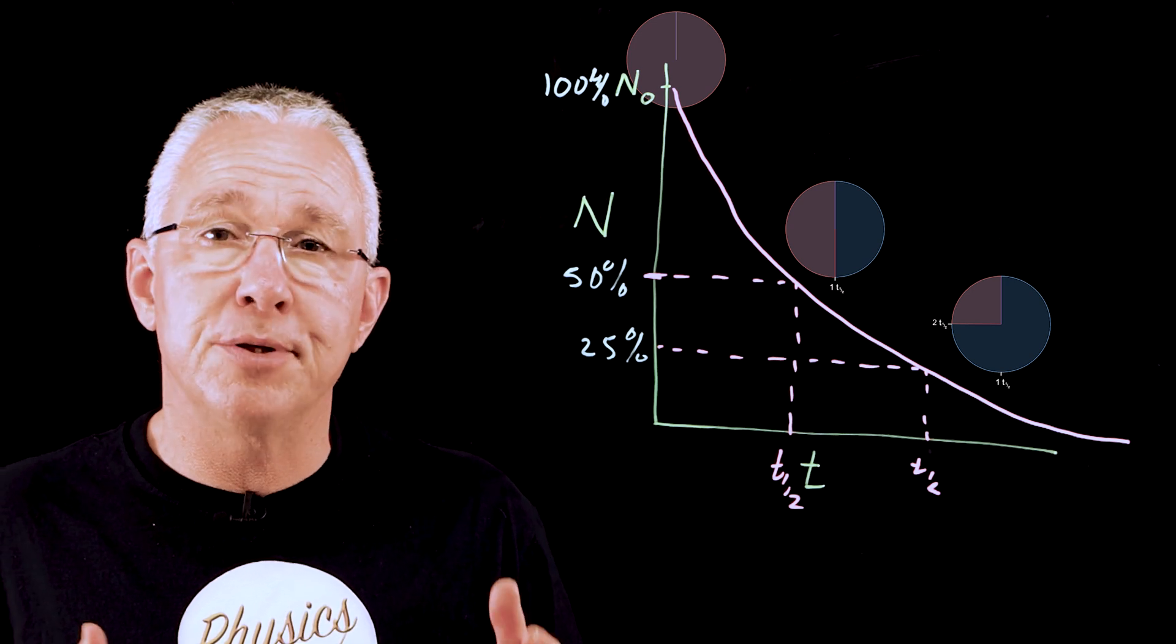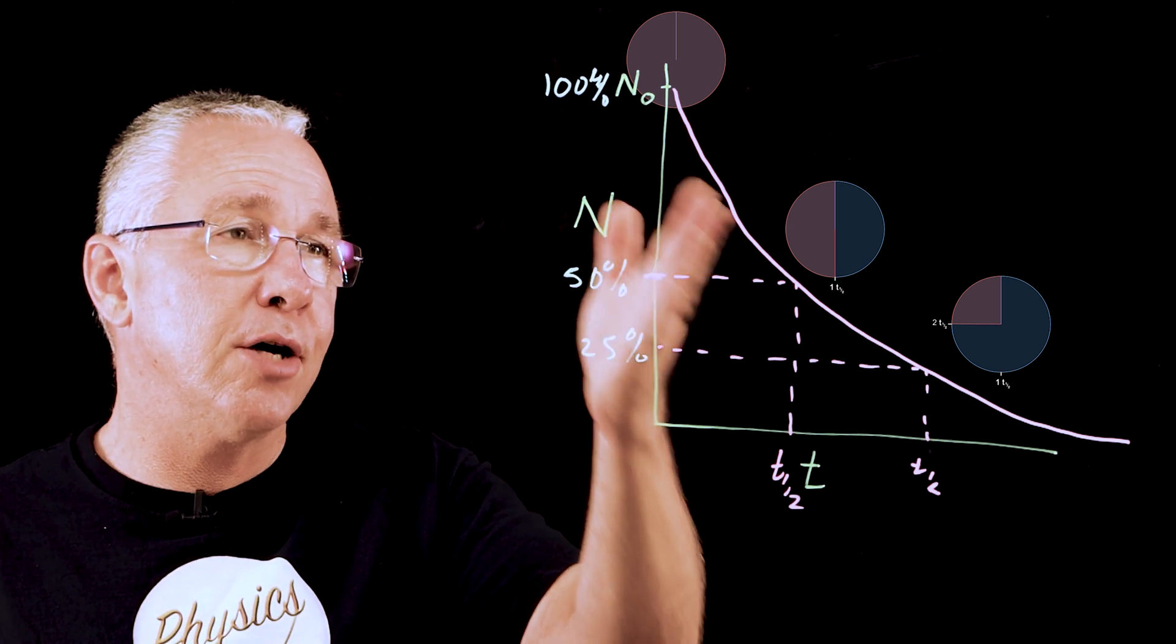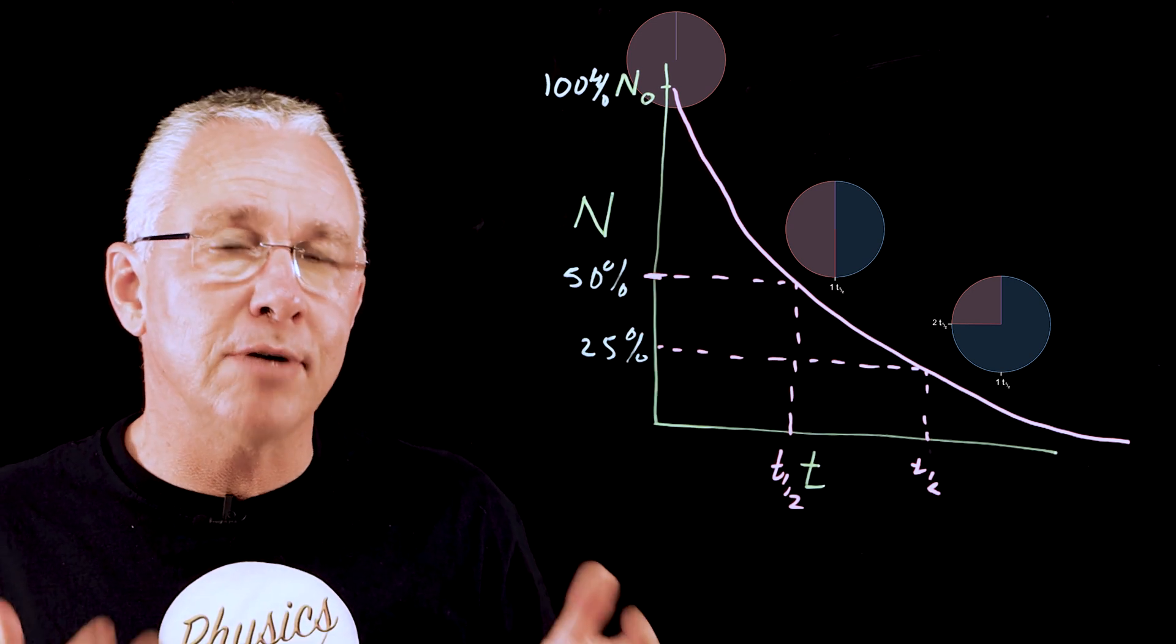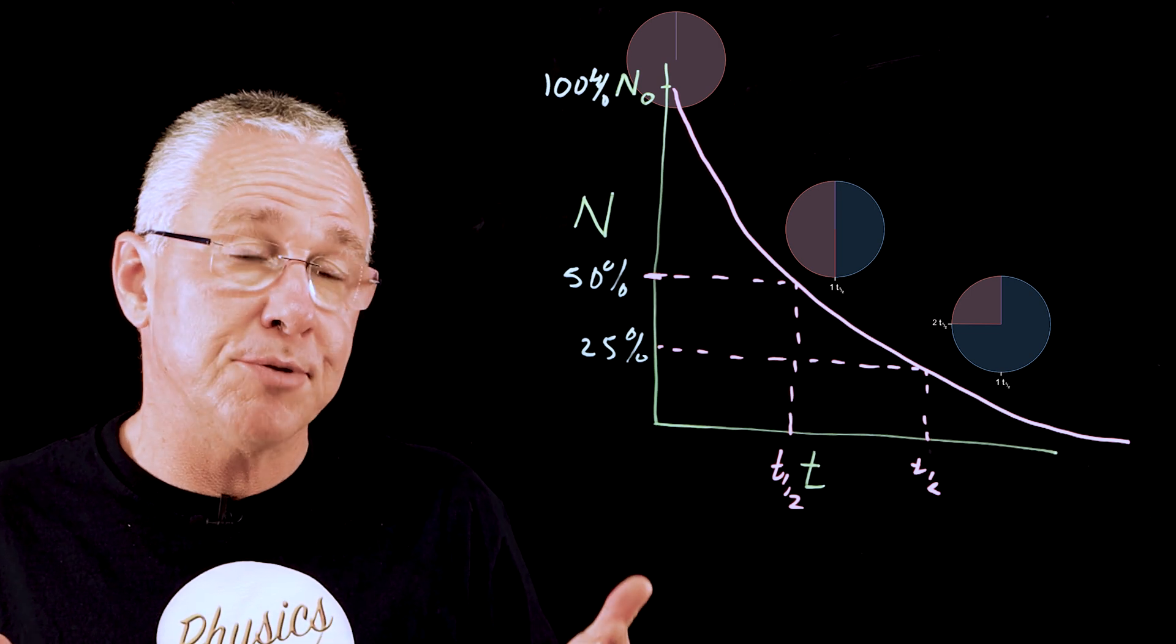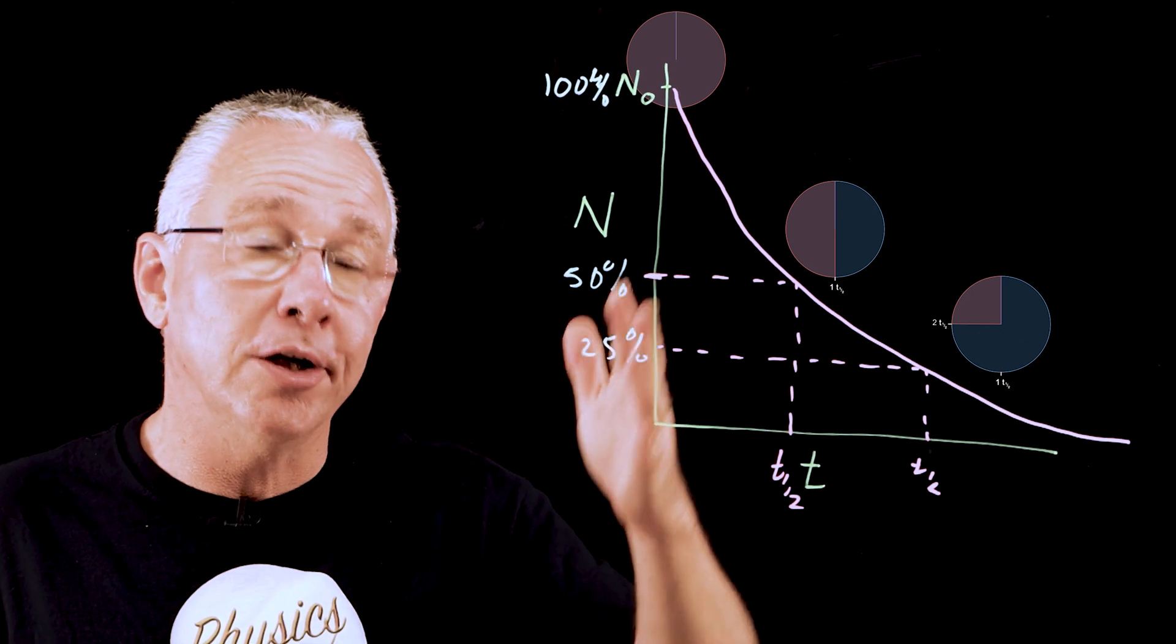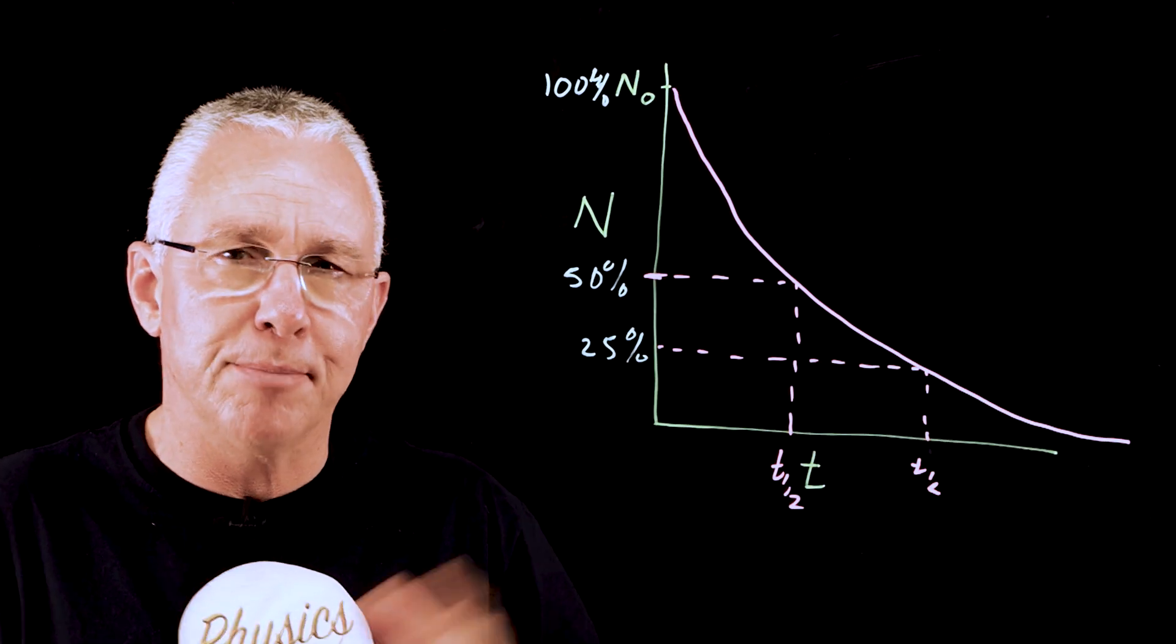Now, the slope of this line represents the rate of decay. And so, as a result, there is a greater rate of decay and therefore the substance is more radioactive earlier on in its decay process.